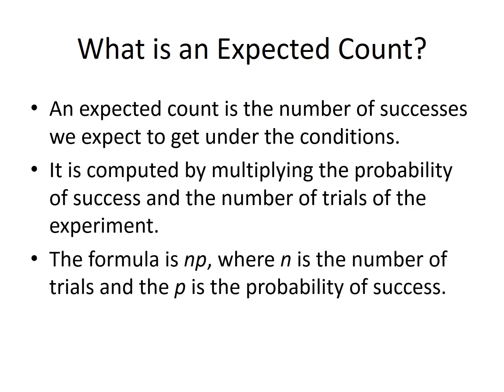The formula is n times p, where n represents the number of trials, and p represents the probability of success.